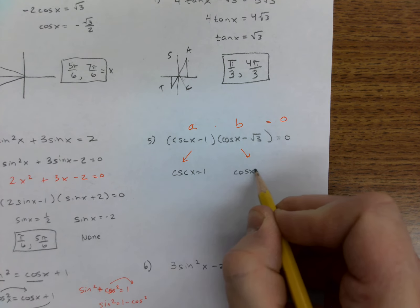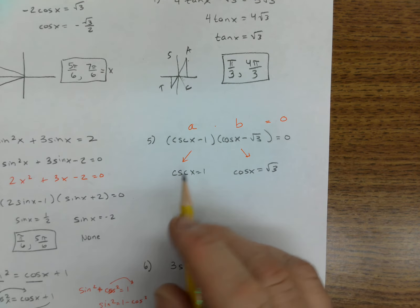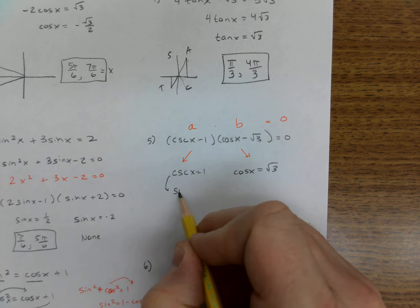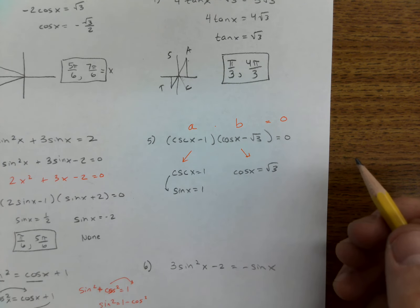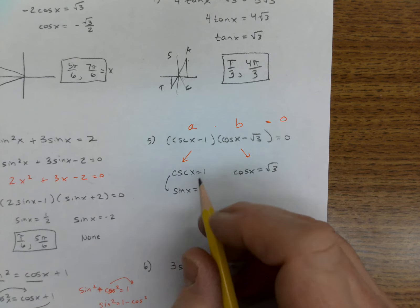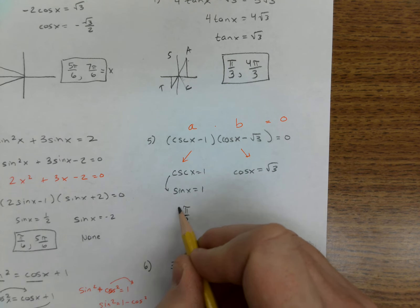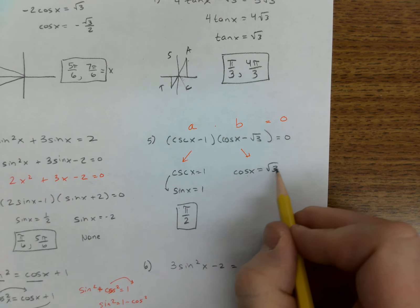And cosine of x would be root 3. Well, I'm not good with cosecant, so I switch it to sine of x is 1.